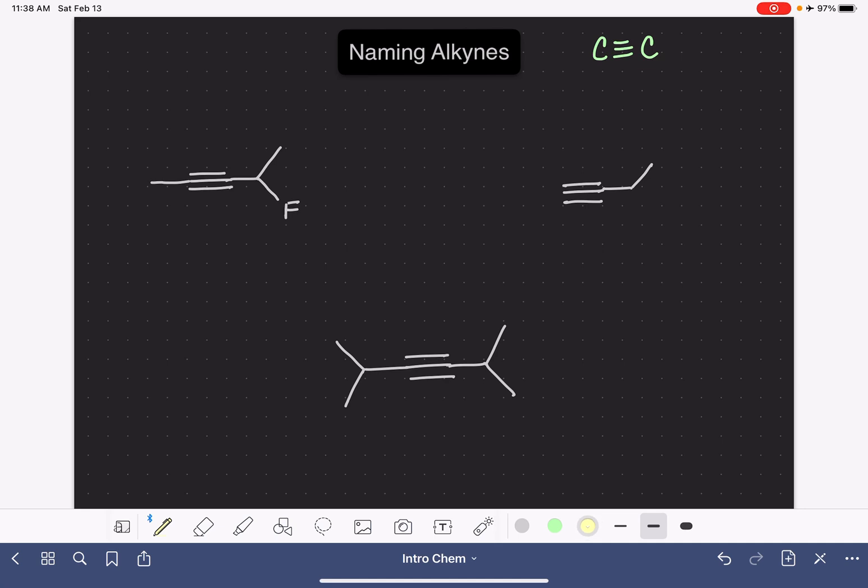When we're naming an alkyne, our job first of all is to find the longest continuous chain of carbon atoms that contains the triple bond, and then we want to number that carbon chain starting at the end that is closest to the triple bond. We don't care anymore about giving small numbers to our halogens or branches. Our goal is to give the smallest number to the alkyne.